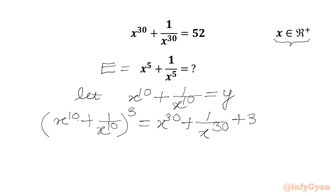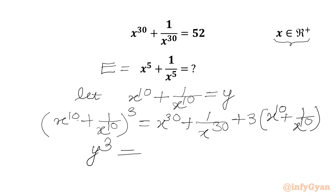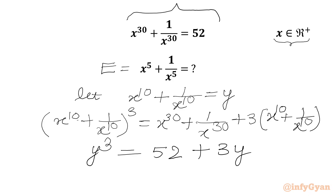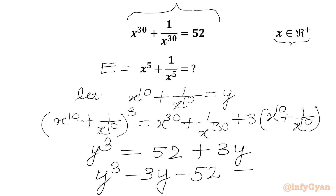The x power 10 and 1 over x power 10 will cancel out, so in the bracket we write x power 10 plus 1 over x power 10. Now in the LHS we write y cubed; in the RHS, x power 30 plus 1 over x power 30 is 52, plus 3 times y. So we get the cubic equation y cubed minus 3y minus 52 equal to 0.